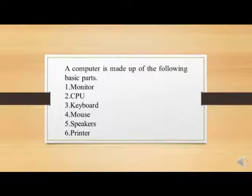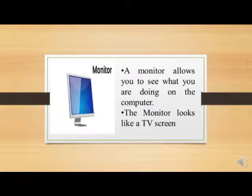A computer is made up of the following basic parts: Monitor, CPU, Keyboard, Mouse, Speakers, and Printer. Monitor: A monitor allows you to see what you are doing on the computer. The monitor looks like a TV screen.